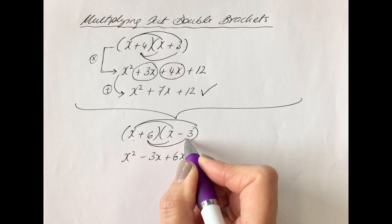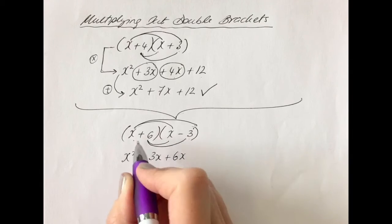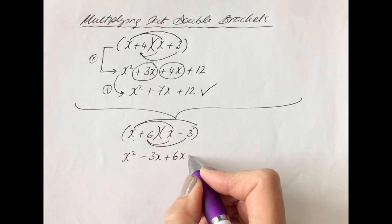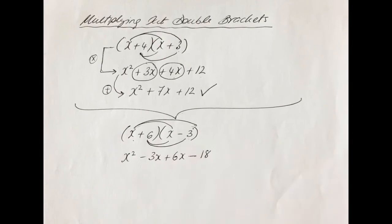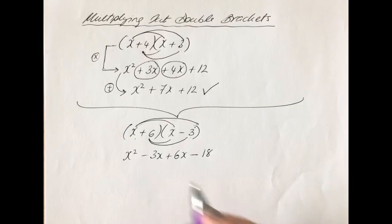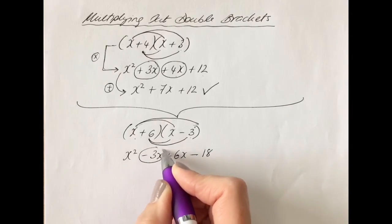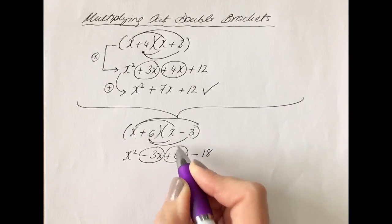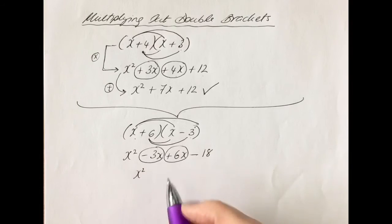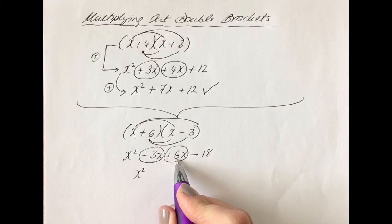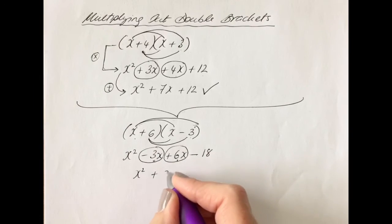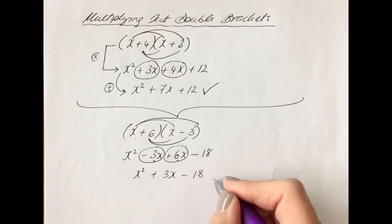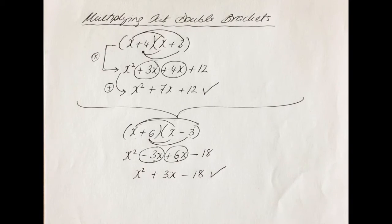Plus 6 times minus 3. Remember, you're multiplying, so 6 times minus 3. If the signs are different, it's minus. A plus by a minus is minus, and 6 times 3 is 18. Now we're going to add together our middle terms because they're the same. We get x squared minus 3x add 6x, so minus 3 add 6. Minus 3x add 6x is 3x minus 18. That is my final answer.